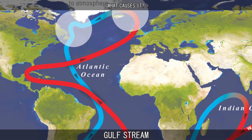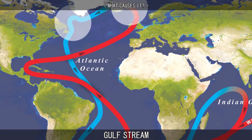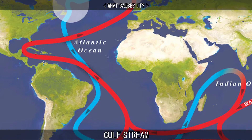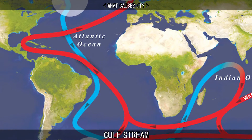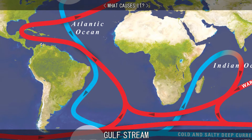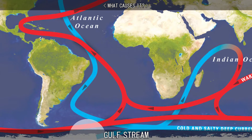As the warm water comes in, colder, denser water sinks and begins moving south, eventually flowing along the bottom of the ocean all the way to Antarctica.